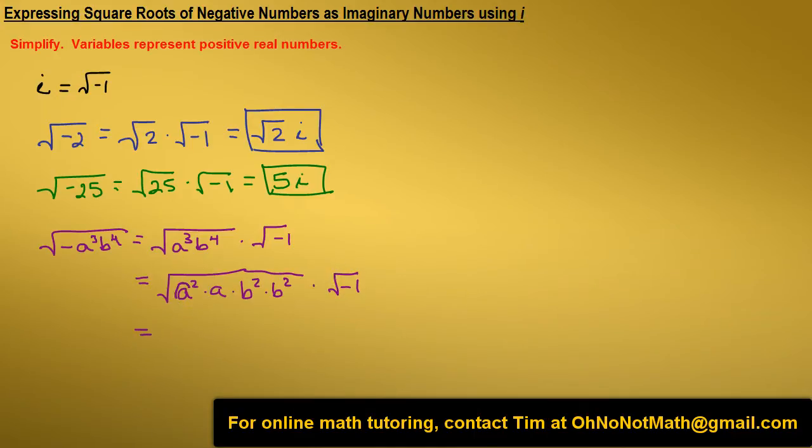So now I can pull out this a, this b, and this b outside the radical. So, I have a on the outside, two b's, which gives me b squared. Under the radical, I'm just left with a. And the square root of negative 1 is i.